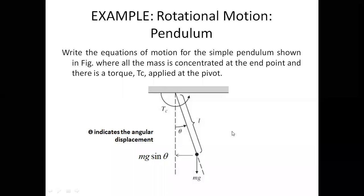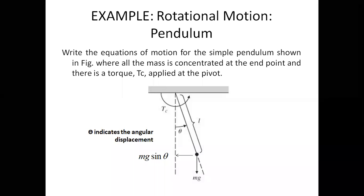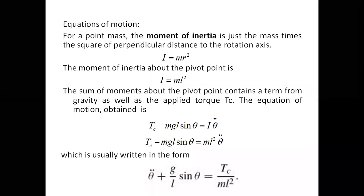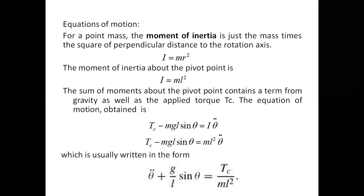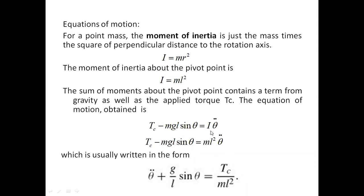Now we apply the fundamental law M equals I times alpha to this body. For a point mass, the moment of inertia is mass times the square of the perpendicular distance from the rotational axis, so I equals m·L². The sum of moments about the pivot contains the applied torque and the gravitational term, giving the equation: Tc minus MgL·sin θ equals I·θ̈.